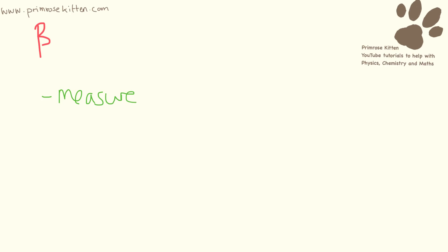Beta radiation is really good for industrial purposes — you can use it to measure the thickness of aluminium sheets or paper. Because this is an industrial process and it's external to the body in a machine, we would like the half-life to be really, really long so we don't have to keep replacing it all the time.